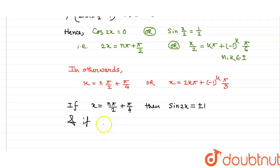And if x equals 2kπ plus (-1)^k times π/3,